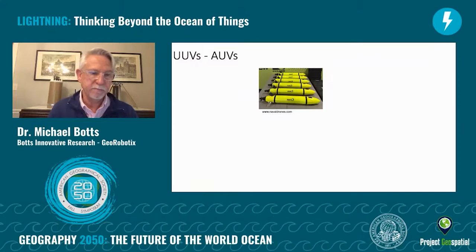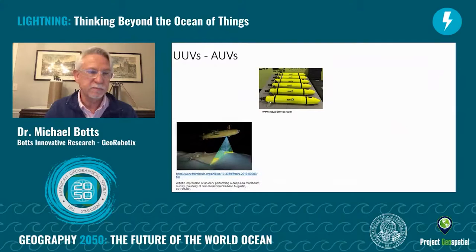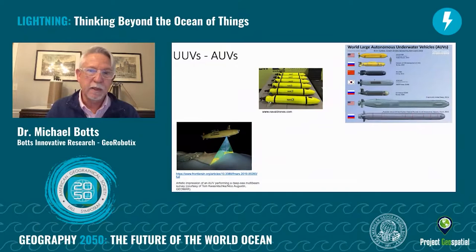Now we also have what are called UUVs and AUVs — unmanned underwater vehicles and autonomous underwater vehicles. These, like UAVs, go under the ocean and take measurements either in situ, or in some cases they have sensors such as lidar that allow us to map the seafloor. Some of these can be quite large, as you can see if you compare them with the silhouette of the man in that image.